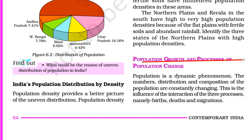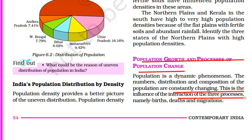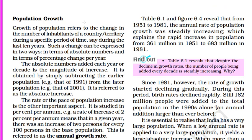Population is a dynamic phenomenon that always changes with time. The numbers, distribution, and composition of the population are constantly changing. This is the influence of the interaction of three processes. One is birth — how many people were born — the other is death — how many people died — and migration, meaning movement from rural to urban or urban to rural. All these things define the population of a place. Population growth refers to the change in the number of inhabitants of a country or territory during a specific period of time.